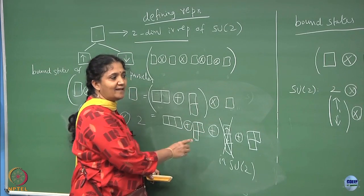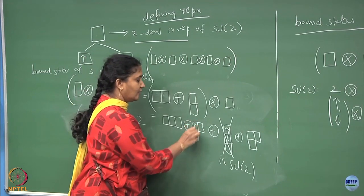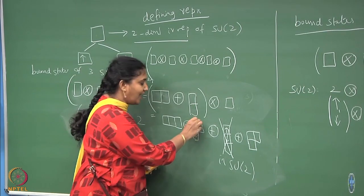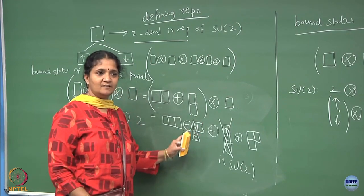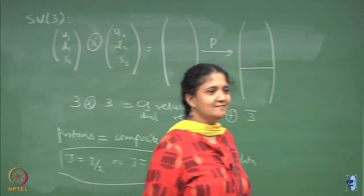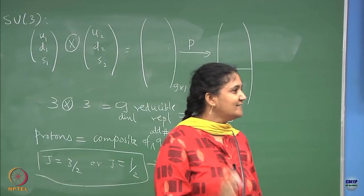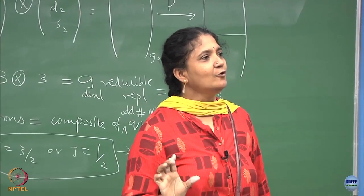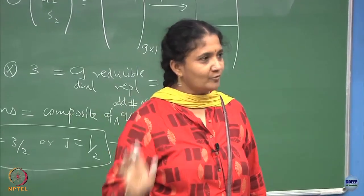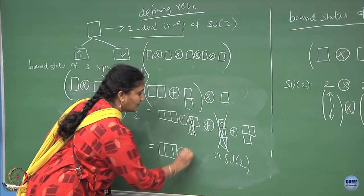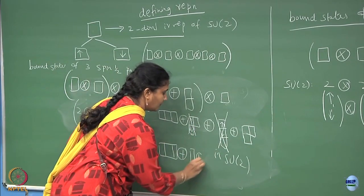This vertical 2-box is like the singlet or a trivial representation - it does not do anything. Any group operation will keep the state itself, so this can be removed. This piece is like multiplying all your results with identity, or multiplying all your characters with the A1 representation. E cross A1 is E, E cross A2 is E. So it is like an A1 trivial singlet representation - you can just forget about it, it is like identity.